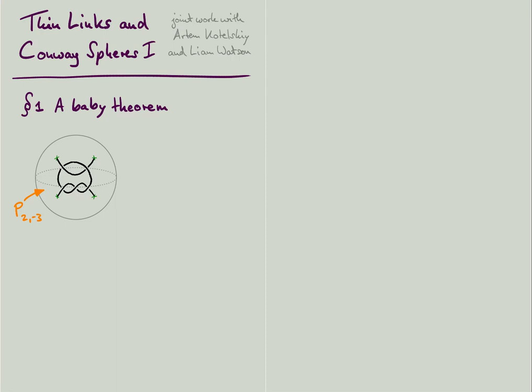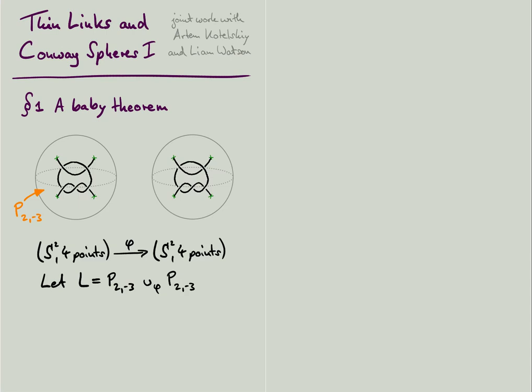We usually consider Conway tangles up to isotopy, so the two strands can wiggle around inside the 3-ball without passing through each other, while the four tangle ends stay fixed on the boundary. Now take two copies of this tangle and glue the boundary spheres together along some map phi such that the four endpoints of one tangle are identified with four endpoints of the other. This way we obtain a knot or a link L in the 3-sphere.